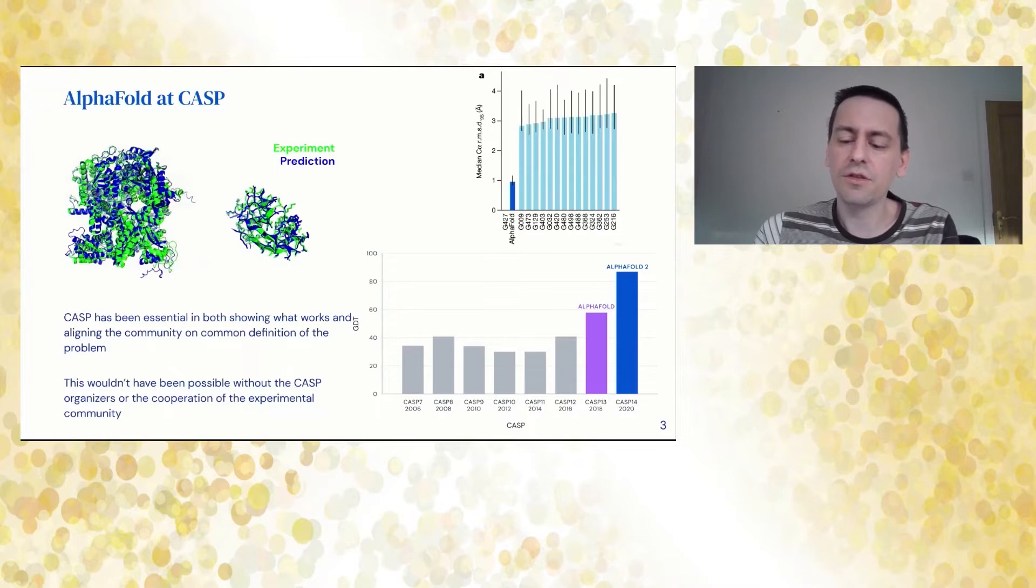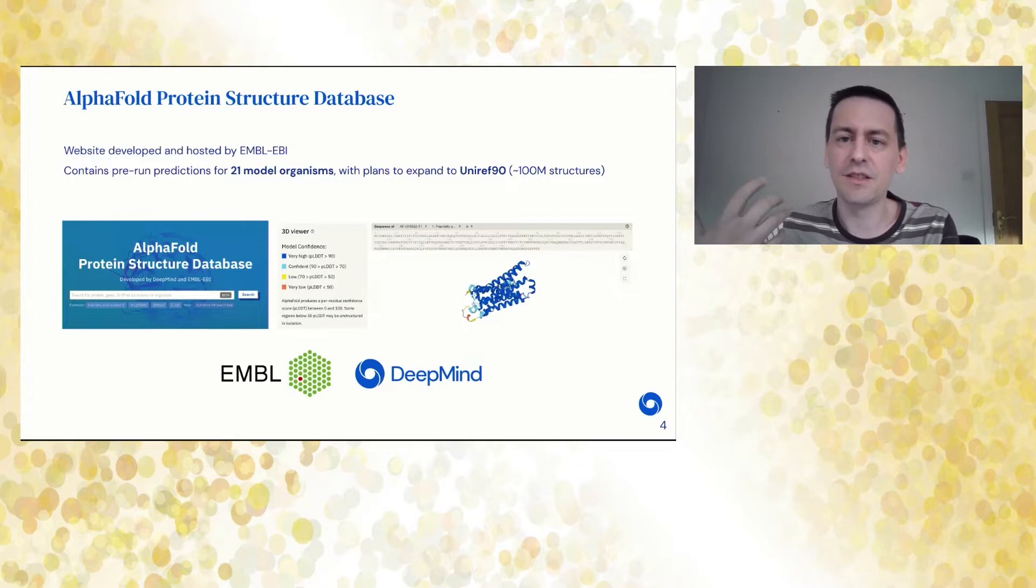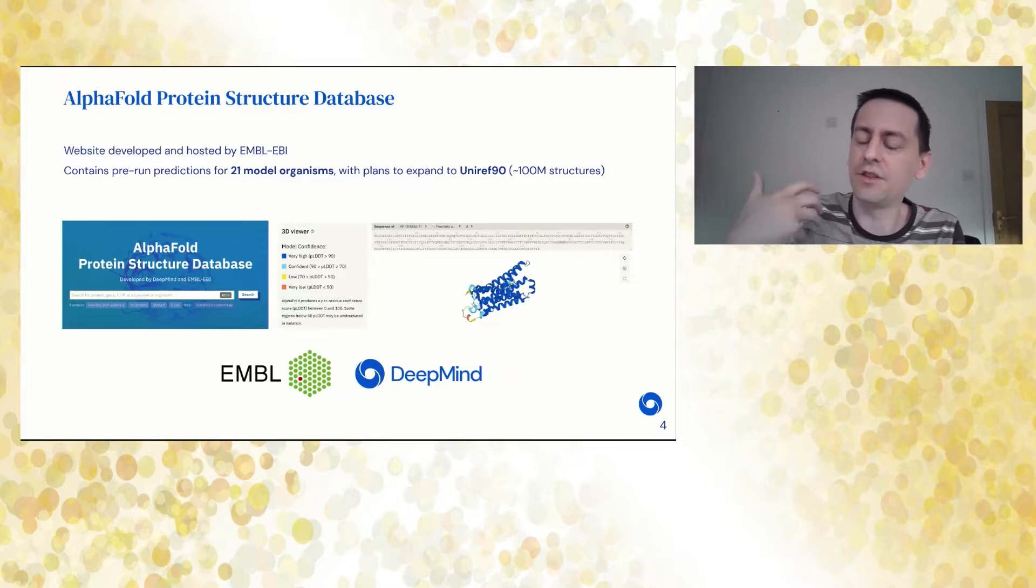AlphaFold did very, very well. We look at RMSD at 95% coverage, and that's sub angstrom for AlphaFold on very challenging proteins in CASP, around a third of what other methods available at the time could do. We've released openly available code that a lot of people have used and notebooks. In collaboration with EMBL, we've released the database of 21 model organisms, and we have a plan to expand from 150,000 predictions there to about 100 million predictions.